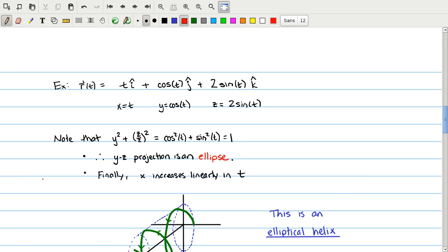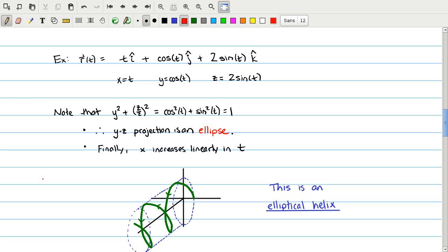Just a couple of examples of parametric curves. Here is a function, a vector function. It is a three-dimensional function, which has an i component, j component, k component, and the magnitude of each of those components differs with time. So here we have written in vector form. We can break that down into parametric form. x equals t, y equals cosine t, z equals 2 sine of t.